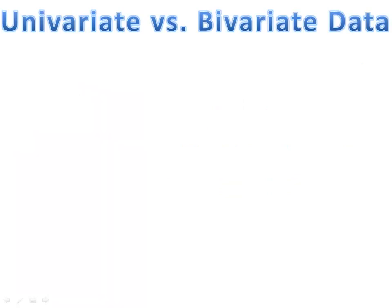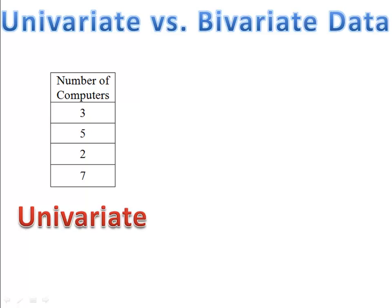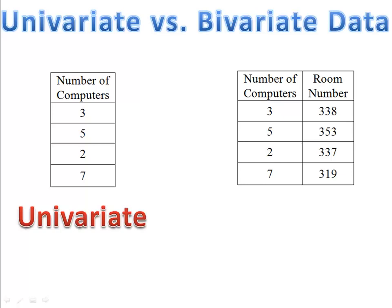There are two types of data we might collect: not only qualitative versus quantitative, but univariate versus bivariate. Suppose we make a list of the computers in each classroom at Sutherland High School. Mr. Jones comes out and here's the list he has. There's only one column on this list — that's univariate data, one variable. Suppose he decides to record not only the number of computers but also the room number. Now he has two columns, an X column and a Y column. This is bivariate data.